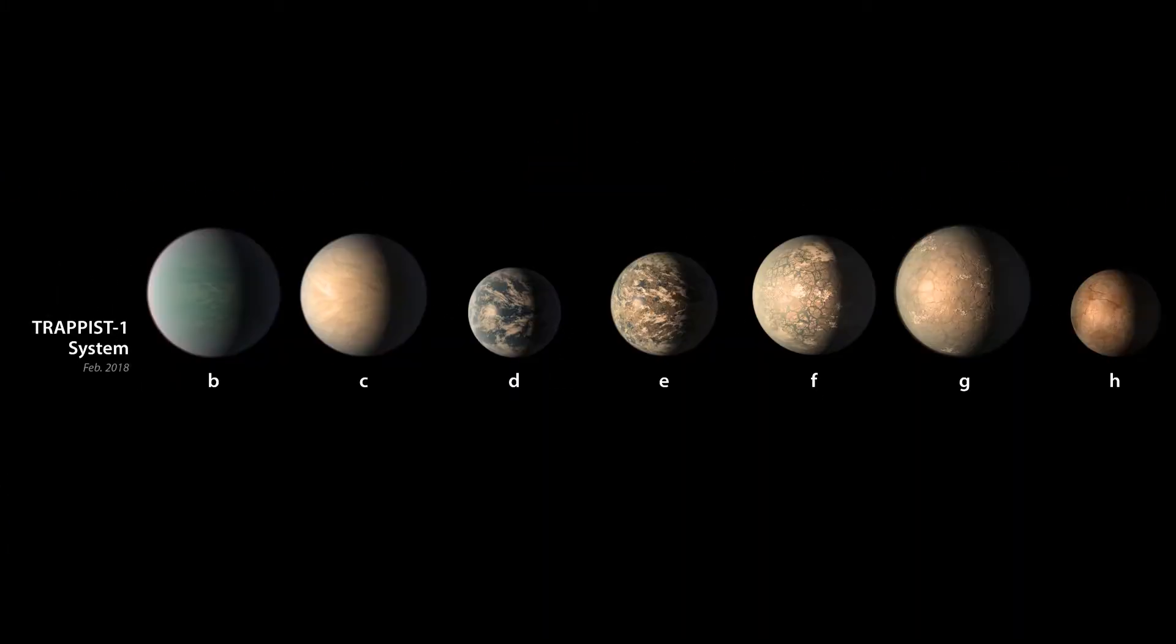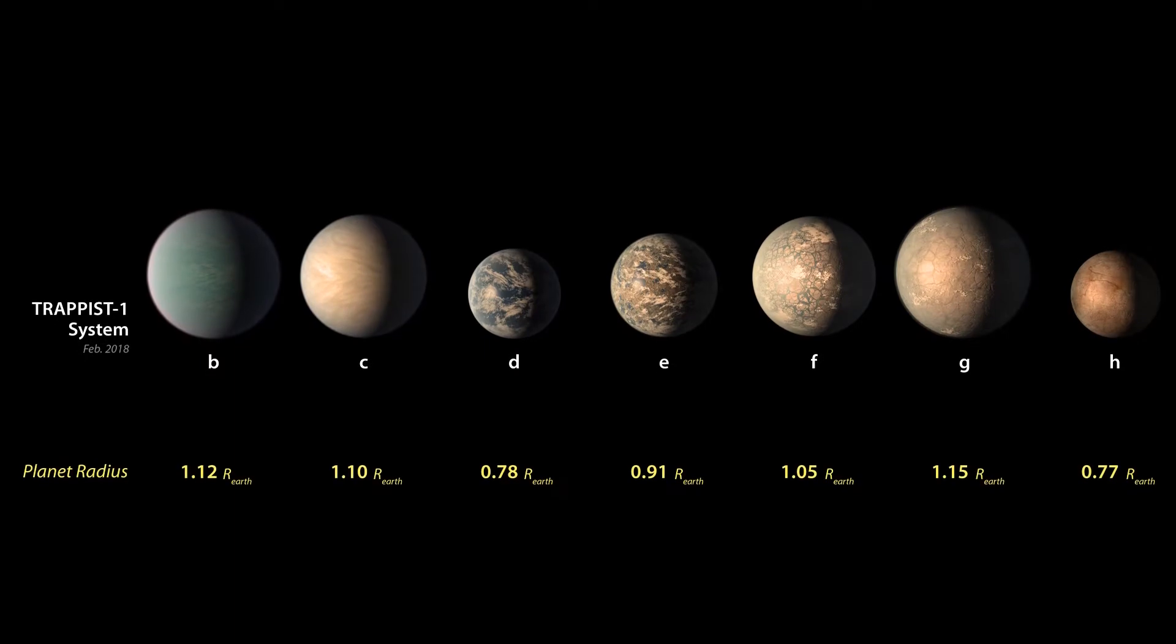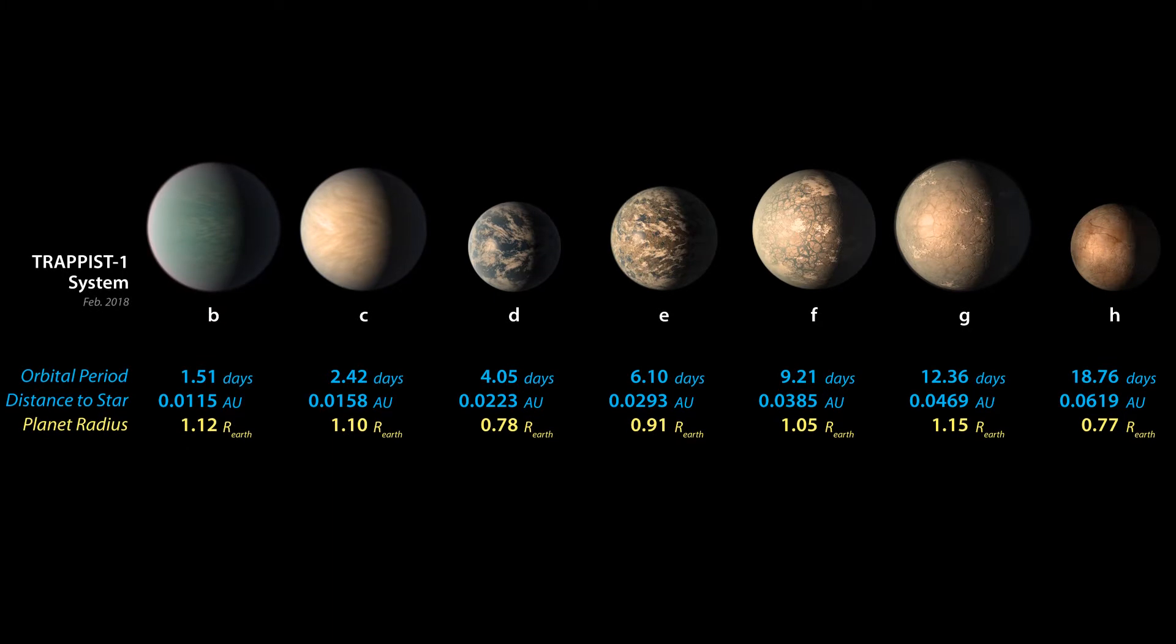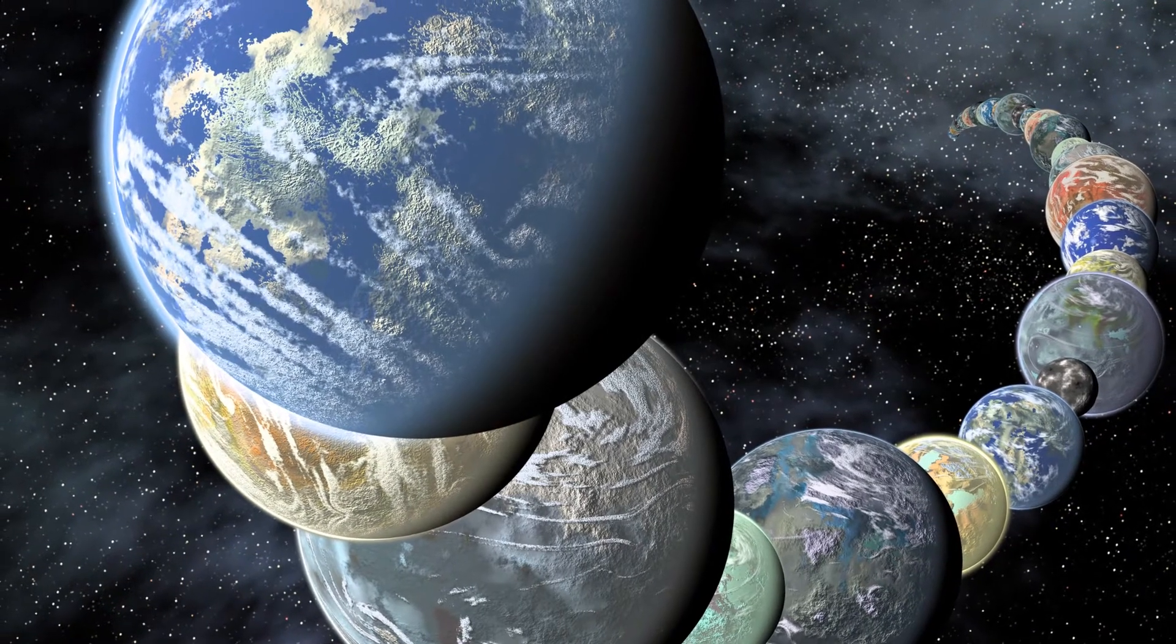The amount of dimming gives us the planets' sizes, and the timing tells us about their orbits. This kind of observation has been done for thousands of exoplanets.